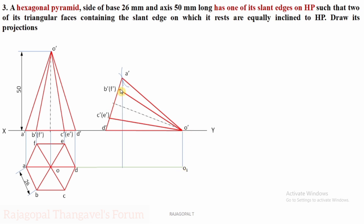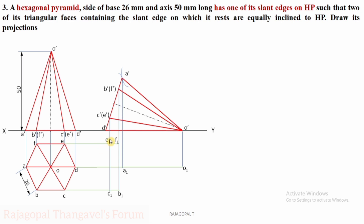Next is A' — on the same extended projector we have A1. Next, for B' and F': extend the projector — F meets here and B meets here — mark as F1 and B1. For C' and E': extend the vertical projectors — C becomes C1 and E becomes E1. Finally D' — extend the projector — D and D' meet at this point — mark as D1.